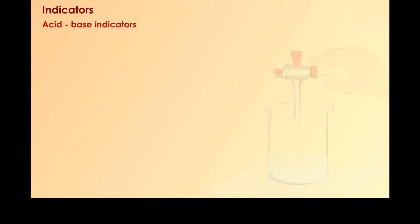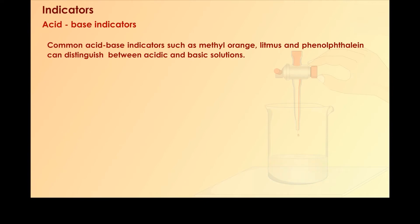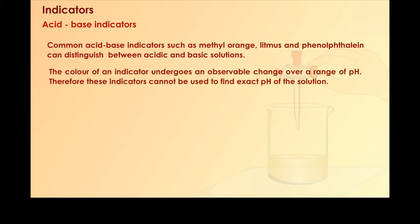Acid-base indicators. Common acid-base indicators such as methyl orange, litmus and phenolphthalein can distinguish between acidic and basic solutions. The color of an indicator undergoes an observable change over a range of pH. Therefore, these indicators cannot be used to find exact pH of the solution.